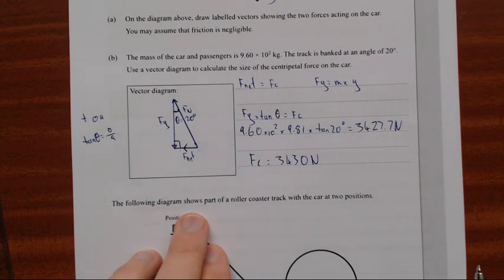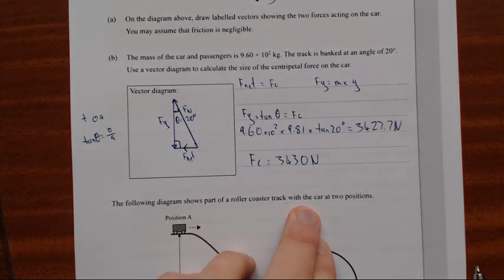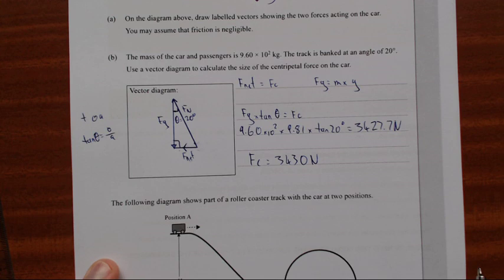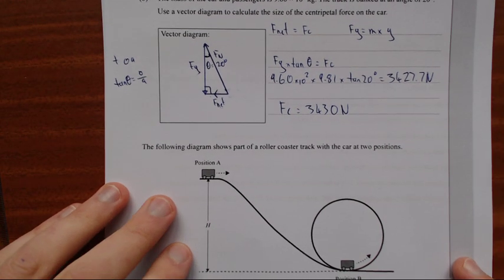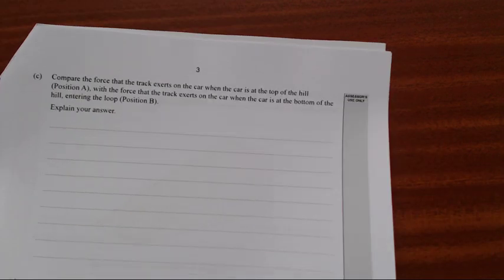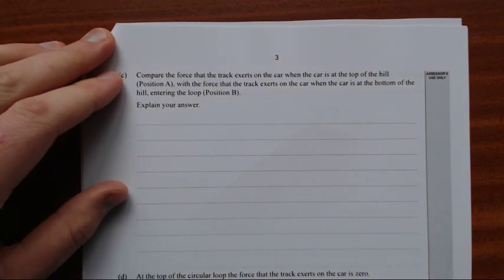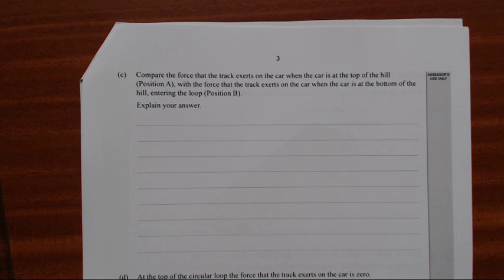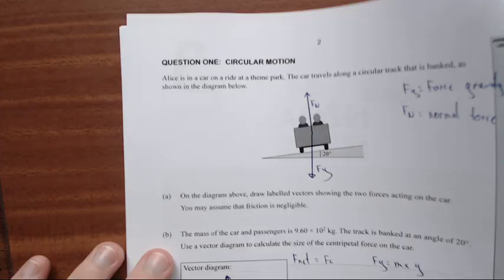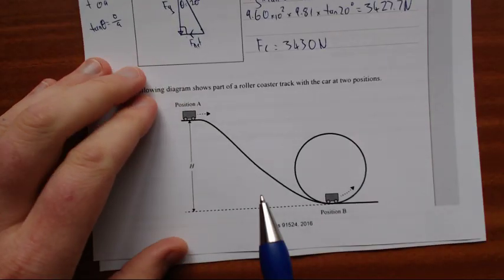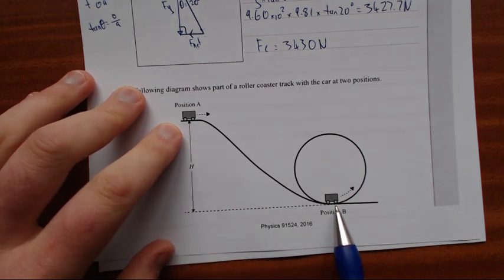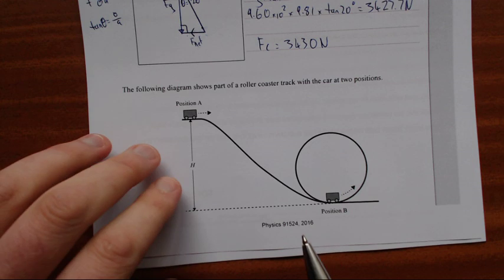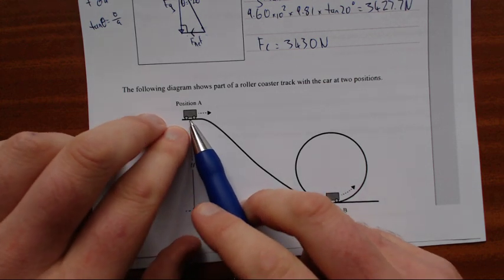Right. The following diagram shows part of a roller coaster with the track at two positions, position A, position B. Compare the force that the track exerts on the car at the top of the hill with the force the track exerts on the car at the bottom of the hill entering the loop, position B. So basically he's asking us to compare the force of the track on the car at A and the force of the track on the car at B. So at position A, there's gravity obviously pulling it down.